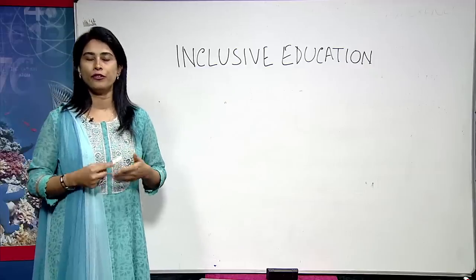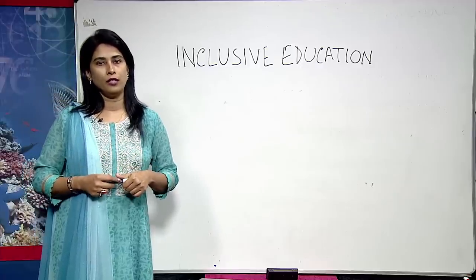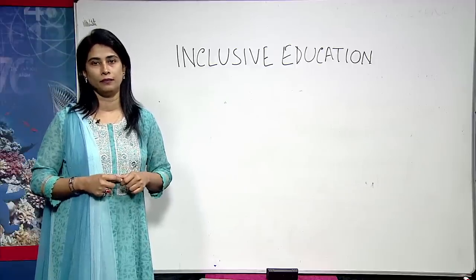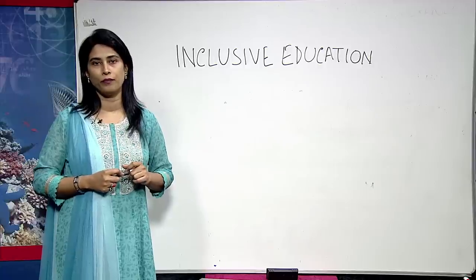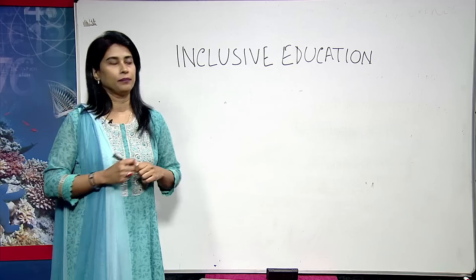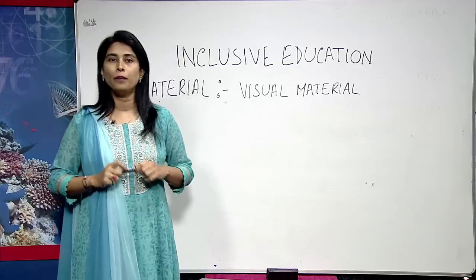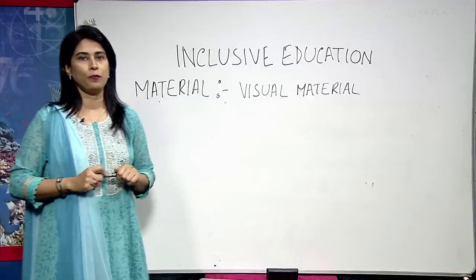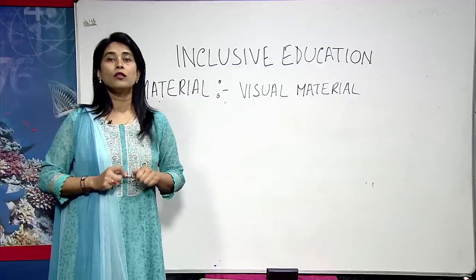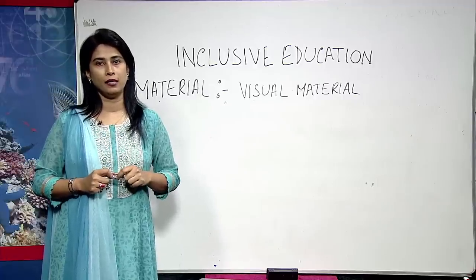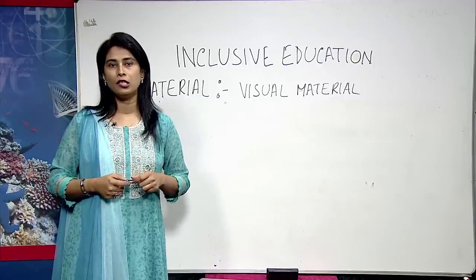The next important thing is how to create an inclusive classroom by making use of learning materials. To bring quality to the classroom, the teacher requires materials to support learning. Any child would fully participate in the learning process if a variety of materials is used in the classroom. Visual material in the form of pictures or photographs has to be used wherever appropriate to support learning. A picture of a seahorse or the Taj Mahal would convey much more to a child than words. Pictures of great personalities, rare animals and plants, photographs of historical places and events would help children imagine in the right direction.